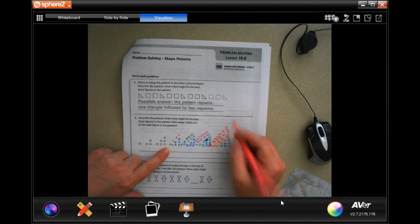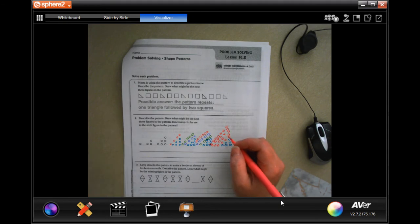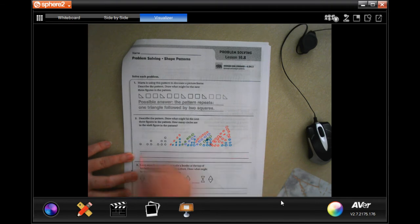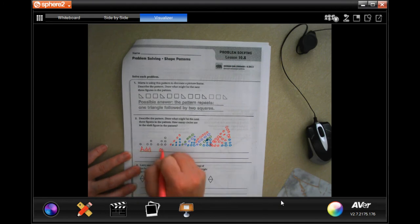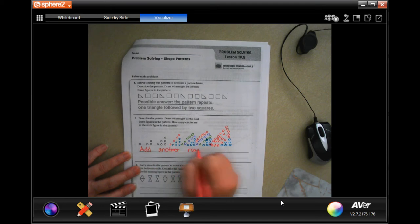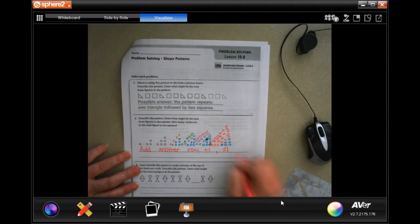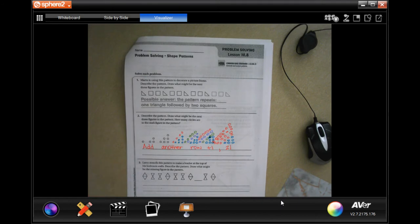And then we would have a row of seven. So in all, we would have, it says, how many circles are in the sixth figure in the pattern? Well, that would be 21. So our pattern would be to add another row plus one, and we would have 21 circles in the seventh row.